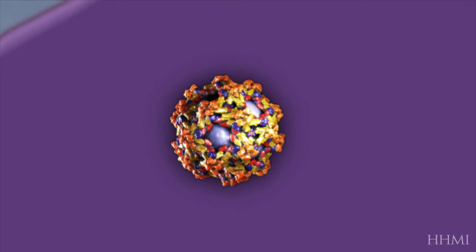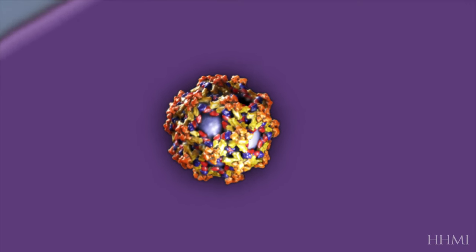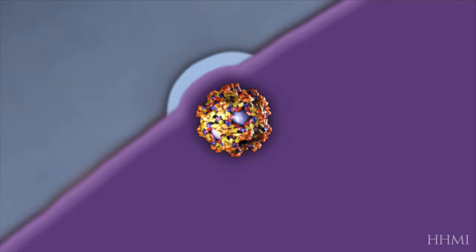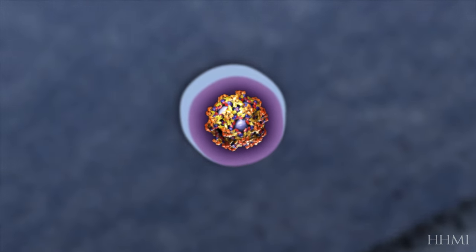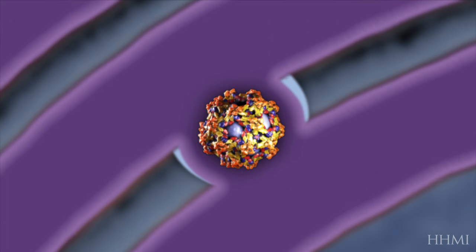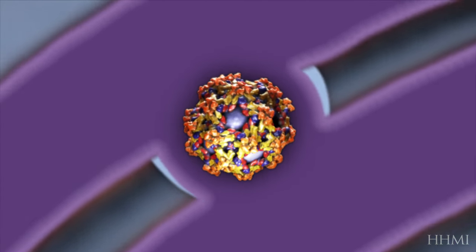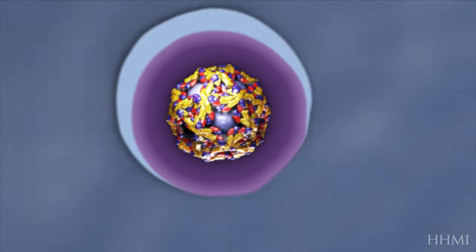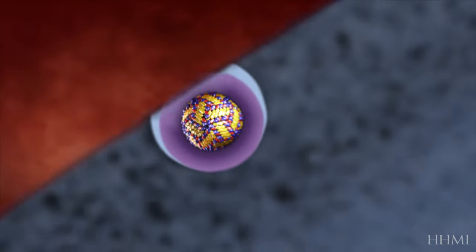Its pre-membrane proteins cover the tips of the envelope proteins to prevent premature fusion back into the cell. The virus buds off and travels through the Golgi apparatus and continues toward the cell surface. Before reaching the surface, the pre-membrane protein is processed, and the virus becomes mature.